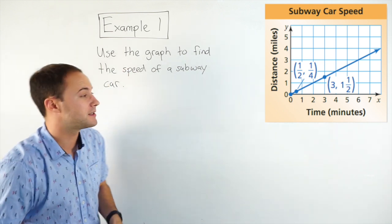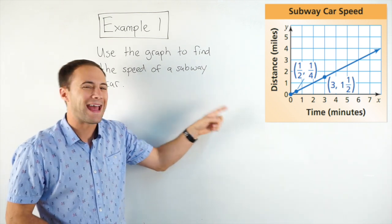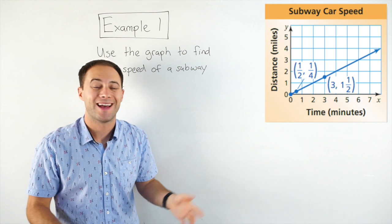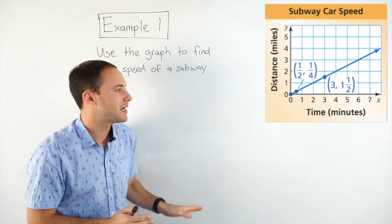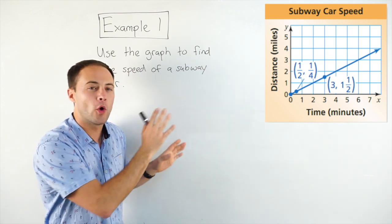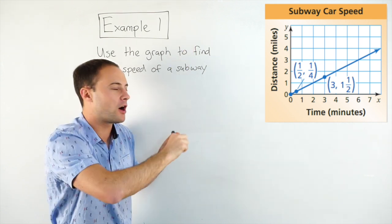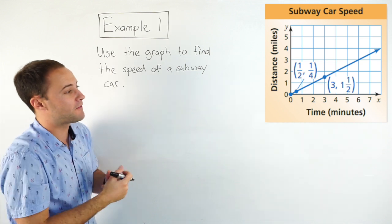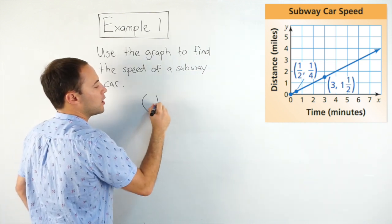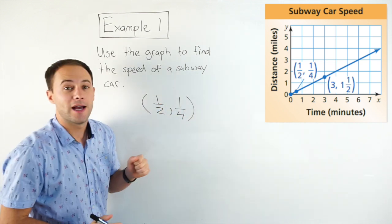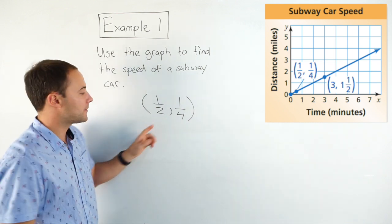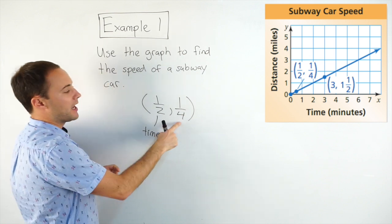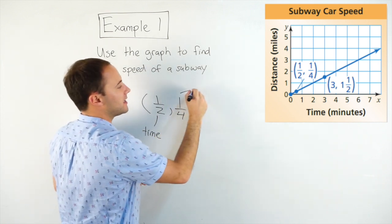And that's important because what that allows us to do is pick any point on that line and use that point to be able to find the speed. It doesn't matter which point we choose. Because it's a straight line, it's always going to be the same. The speed will always be the same along that line. So we can choose any point we want. Let's just choose that first point. That first point is 1/2, 1/4. And if we look, this is the x-coordinate. And like we said earlier, on the x-axis, that's the time. And this is the y, and that is the distance.